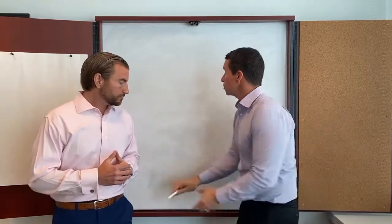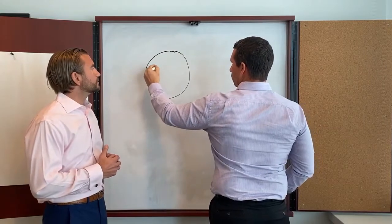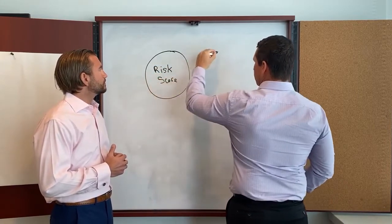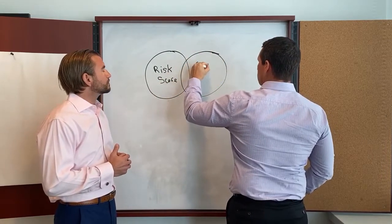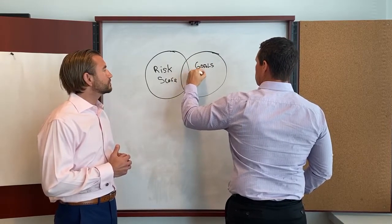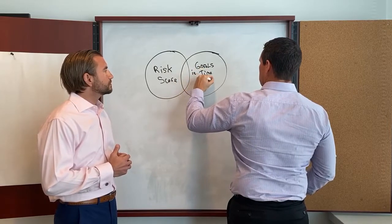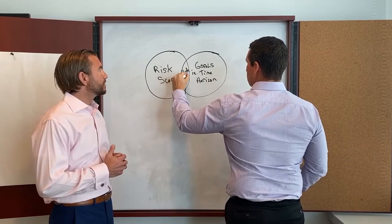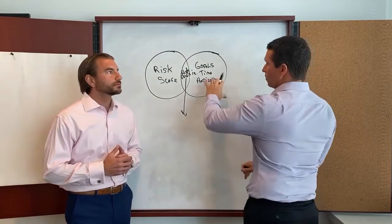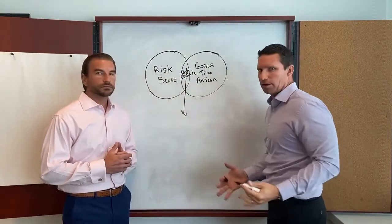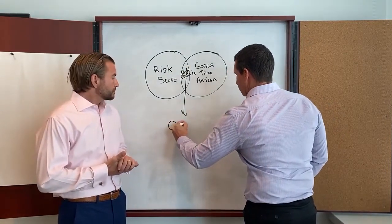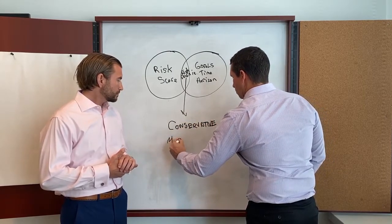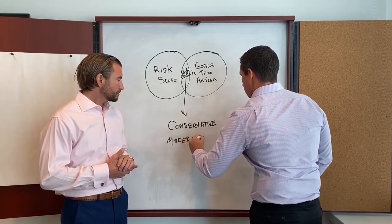We put the two together — we can do a Venn diagram here. We have our risk score on one side and our goals and time horizon on the other, and the intersection of these two areas is our risk profile. You might see various classifications in the marketplace, but very common would be conservative, moderate, or aggressive.